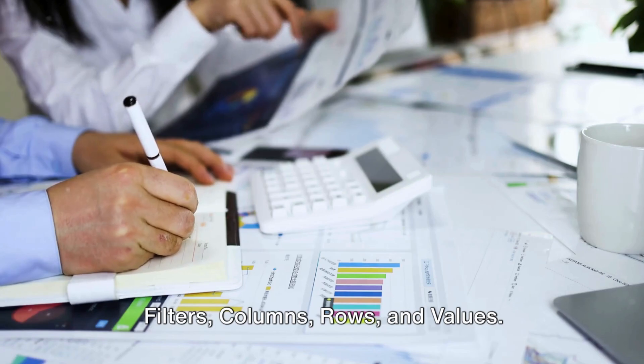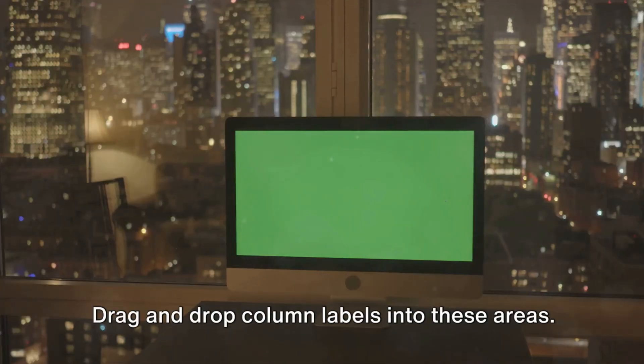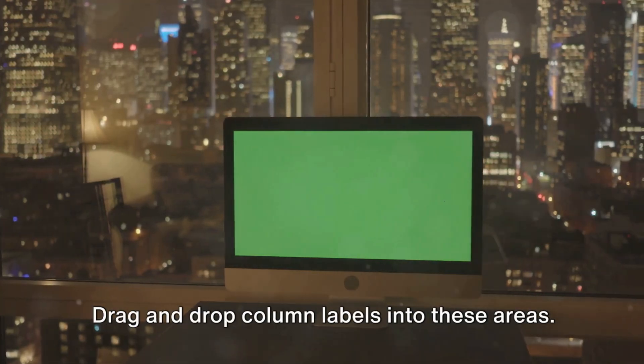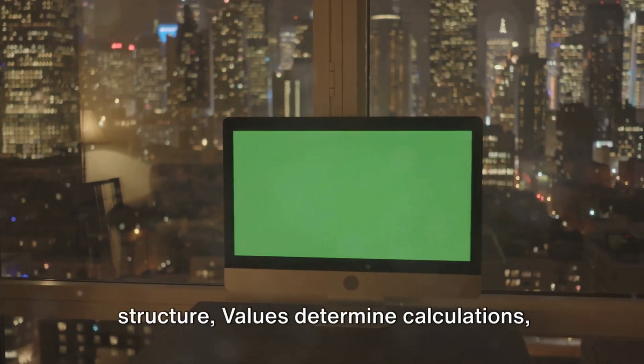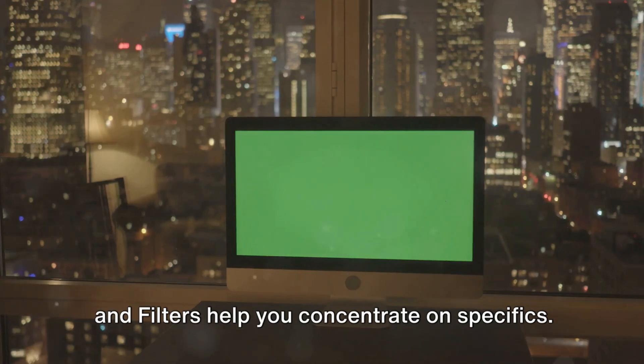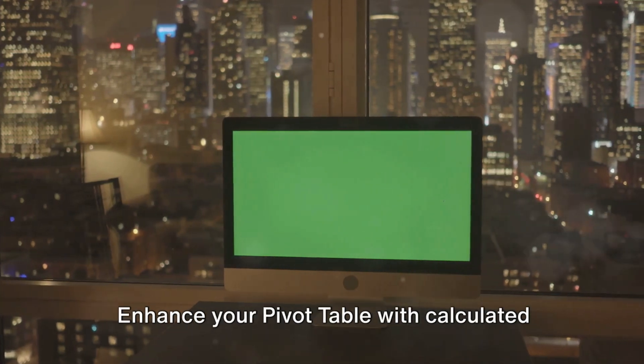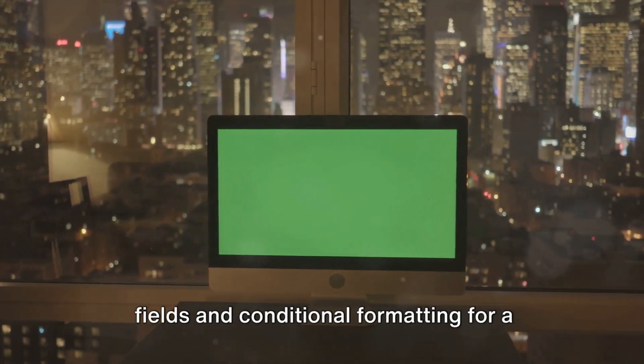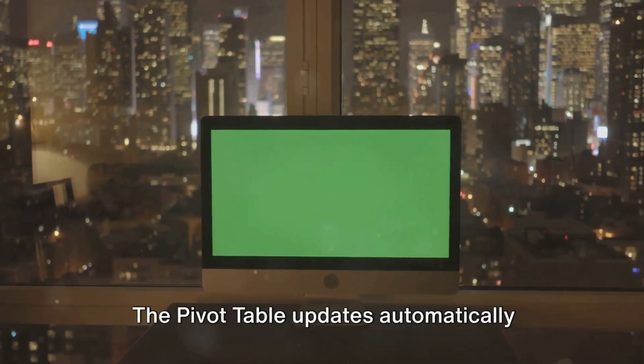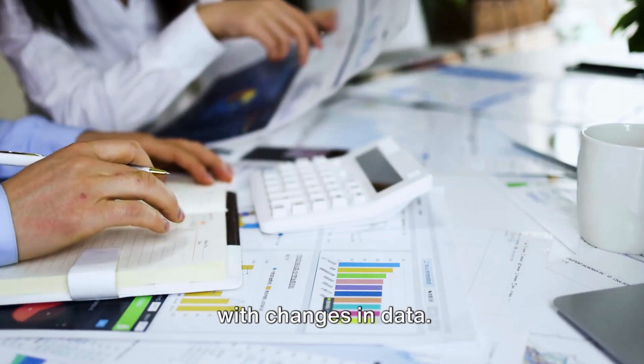After deciding, click OK to create your pivot table. The task pane on the right is divided into four areas: filters, columns, rows, and values. Drag and drop column labels into these areas. Rows and columns form the table structure, values determine calculations, and filters help you concentrate on specifics. Enhance your pivot table with calculated fields and conditional formatting.